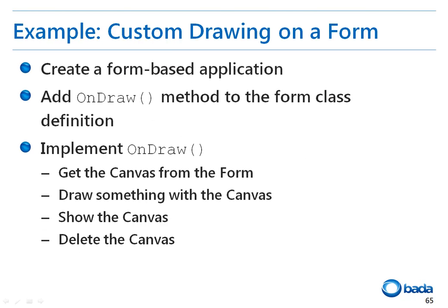Now let's have a look at an example that implements a custom drawing for a form based application. The first thing to do is to create a form based application, then add the onDraw function to the form class. The onDraw function acquires the canvas, draws using the canvas, shows the canvas, and deletes the canvas in sequence.